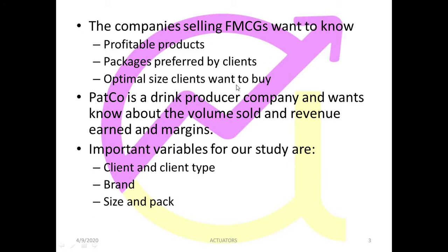These are the major factors which an FMCG selling company considers. In our particular example, we are going to deal with a company called Patco. Patco is a drink producer company and wants to know about the volume sold, revenue earned, and margins. The company has given us its data and wants to know how much volume it has sold, how much revenue, how much sales, and what selling price it has earned. For example, if he has sold 10,000 units, that is the volume sold; if he got 50,000 in revenue, then the margin is basically the difference between the revenue and the cost of producing and selling that particular good.